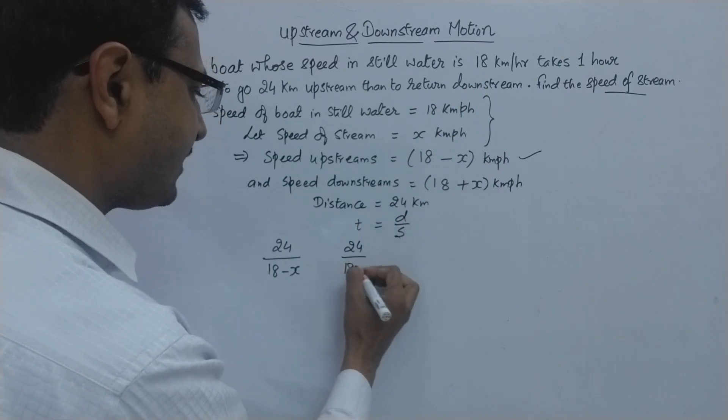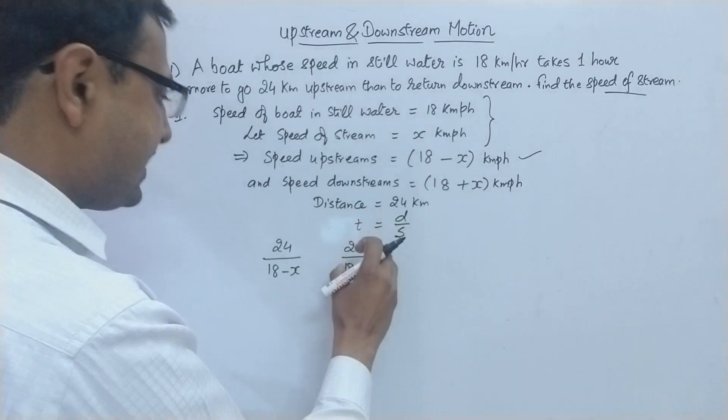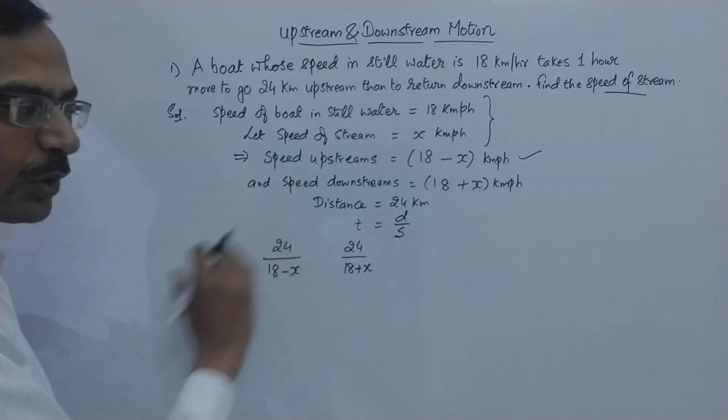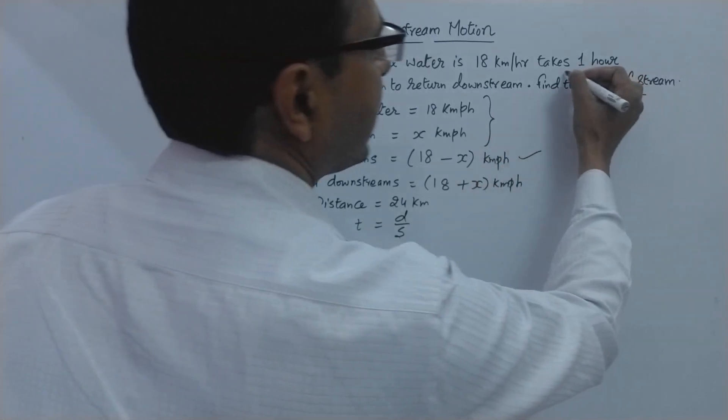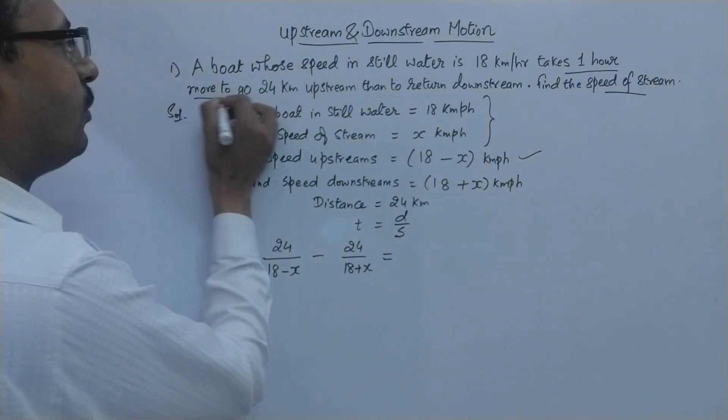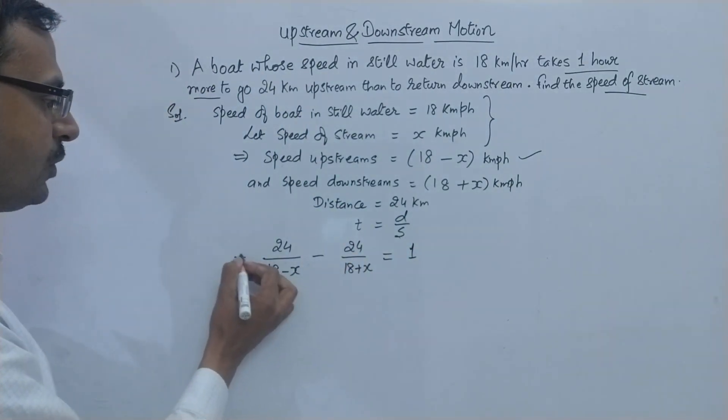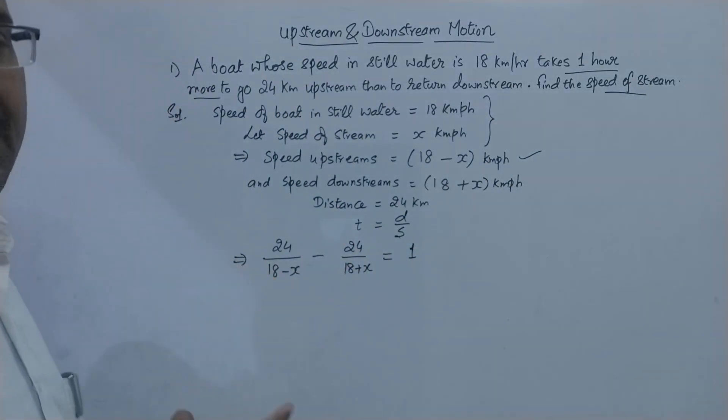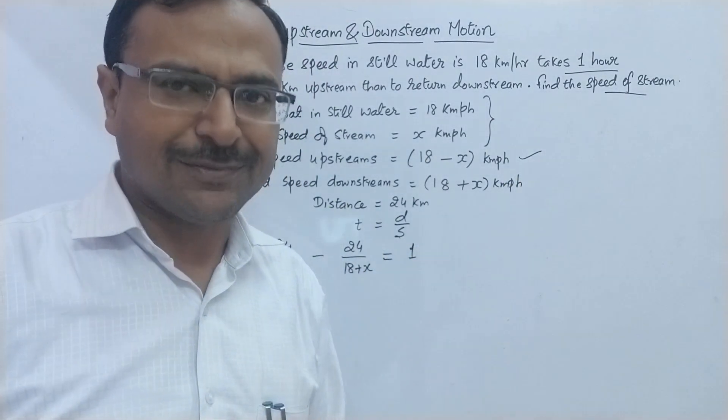And there is another time, distance is same, so while returning it is coming downstream so downstream speed is 18 plus x. So between these two, this time is less and this time is more and the difference between the two times is given in the question as one hour, one hour more. So the difference is one hour. Now we have to solve this equation in order to get the value of x which will be our speed of stream.